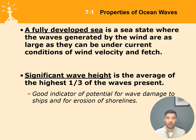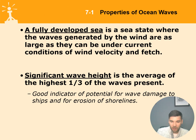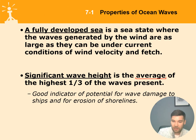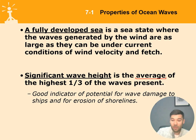Significant wave height is especially important when reading weather forecasts. It is defined as the average of the highest one-third of waves. The key word is average — if the forecast says 10 meters, it doesn't mean the maximum possible wave height is 10 meters. It means only one-third of waves were measured at that height and that's the average. Some waves will actually be bigger — if the forecast states 10 meters, some waves could be 13 meters.